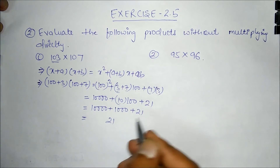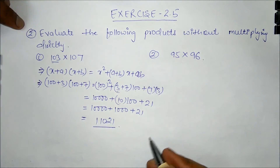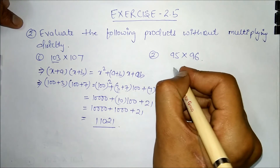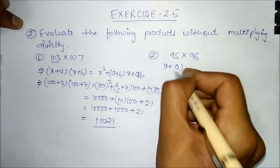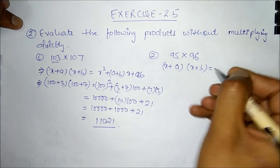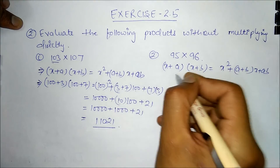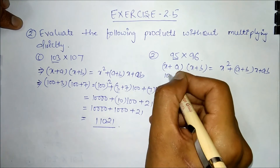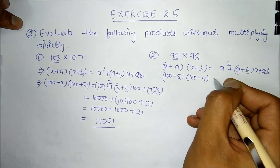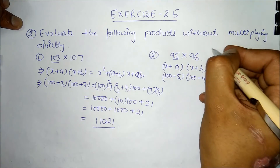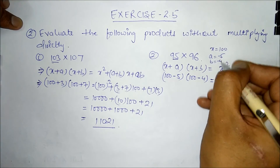Again in this question, we use the same identity: (x + a)(x + b) = x² + (a + b)x + ab. In this case, 95 × 96 can be written as (100 - 5) and (100 - 4). Here x = 100, a = -5, and b = -4.